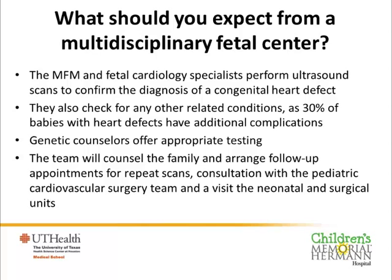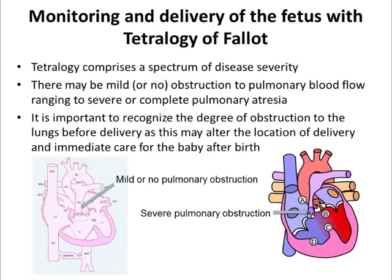What will we look for in the ultrasound scans? We will want to do more than one scan during pregnancy because there are certain things in Tetralogy of Fallot that we would like to monitor. It's a spectrum of disease, particularly when looking at the size of the lung artery. It can involve a good-sized lung artery with mild or no pulmonary obstruction, or this obstruction may look very severe right from the first scan. A baby with a reasonable pulmonary trunk may also develop a degree of stenosis that can become quite important before delivery.